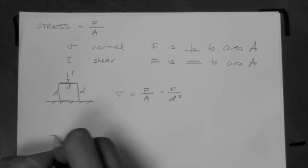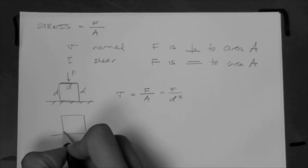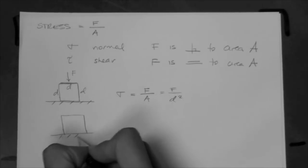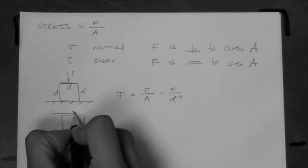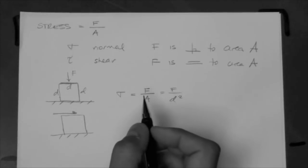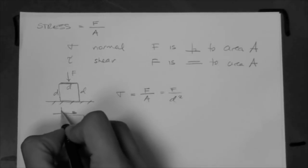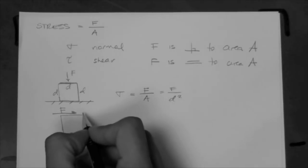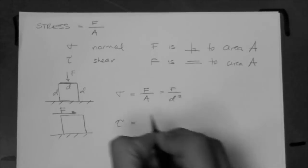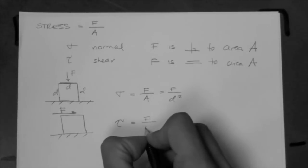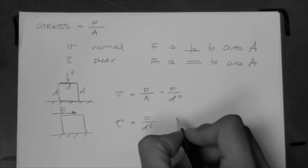What happens if we have the same cube, but there is a force applied parallel to the top of the cube, like this? In this case, tau is the relevant stress, and that's F over, again, D squared.